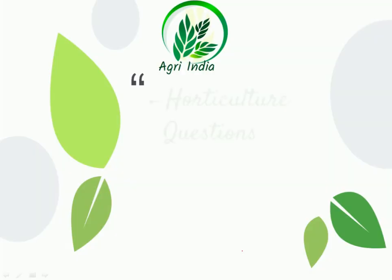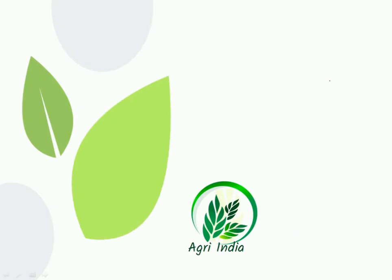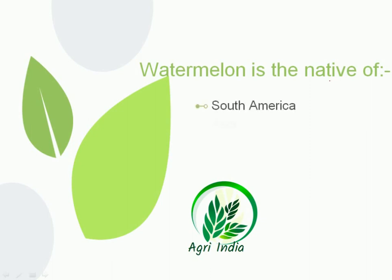Today's topic is horticulture, which is one of the important topics of agriculture, covering mainly vegetable crops and fruit crops. Today's question: watermelon is the native of — options are South America, Asia, Africa, and Australia. South America crops include potato, sweet potato, and tomato. Asia origins include garlic, wheat, and rice. The correct answer is Africa — watermelon is native to Africa.